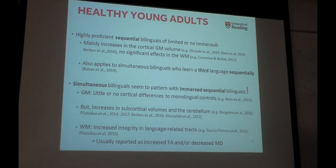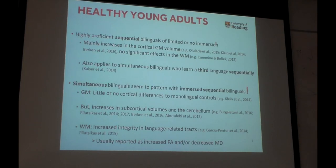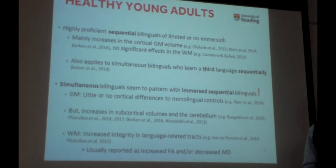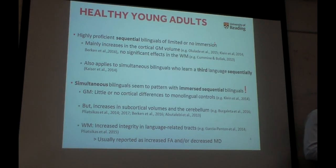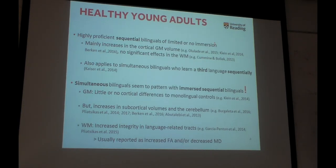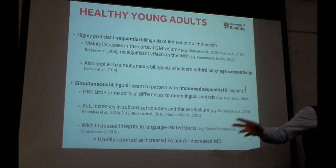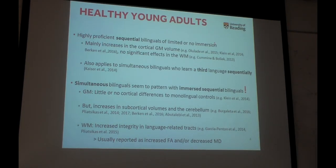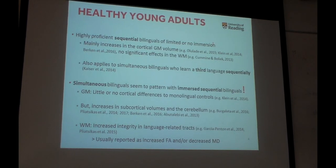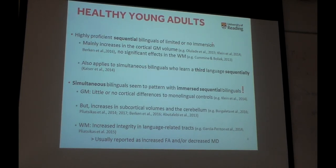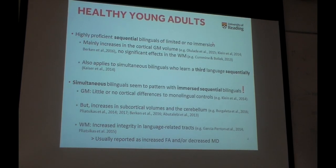I have separated the evidence in a way that's convenient to me but also makes sense. When you look at sequential bilinguals of high proficiency with no immersion or limited immersion in a country that speaks the second language, when you compare them to monolinguals, you find increases in the gray matter — in the volume or the thickness of the gray matter — but you don't find any significant effects in the white matter.